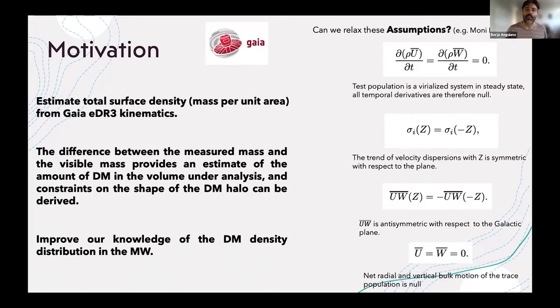The motivation is to improve our knowledge on the dark matter density distribution in the Milky Way. The difference between the measured mass and the visible mass provides an estimate of the amount of dark matter. Volumetric analysis and constraints on the shape of the dark matter halo can be derived.